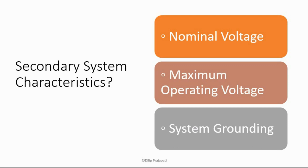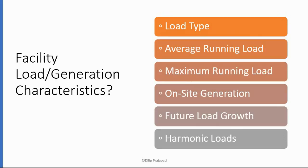Secondary system characteristics covers nominal voltage, maximum operating voltage, and system grounding. Facility load or generation characteristics covers load type, average running load, maximum running load, on-site generation, future load growth, and harmonic loads.